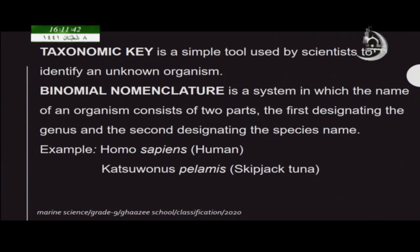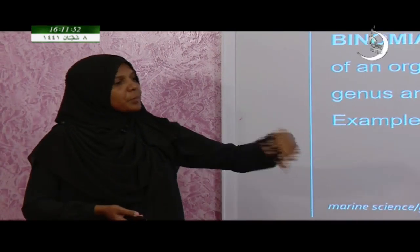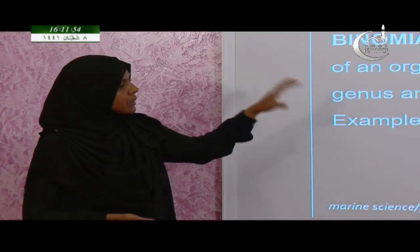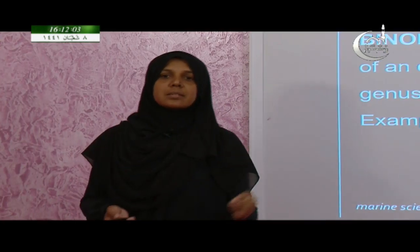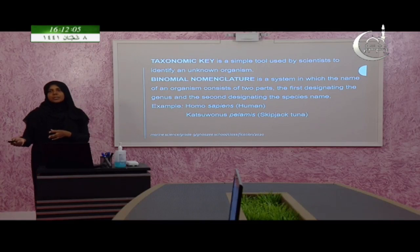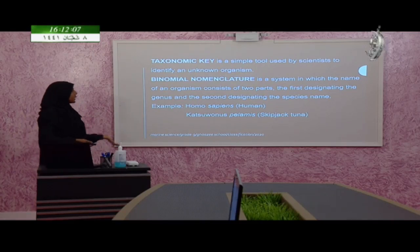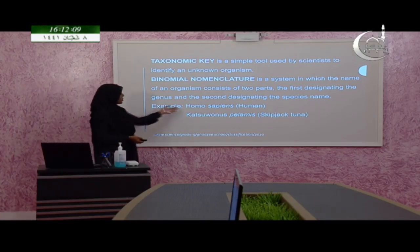Binomial — 'bi' refers to two. In binomial nomenclature, all organisms should have two names. Previously when explaining the order of classification, I mentioned genus name and species name. The binomial nomenclature is the system which gives organisms a genus name and a species name.